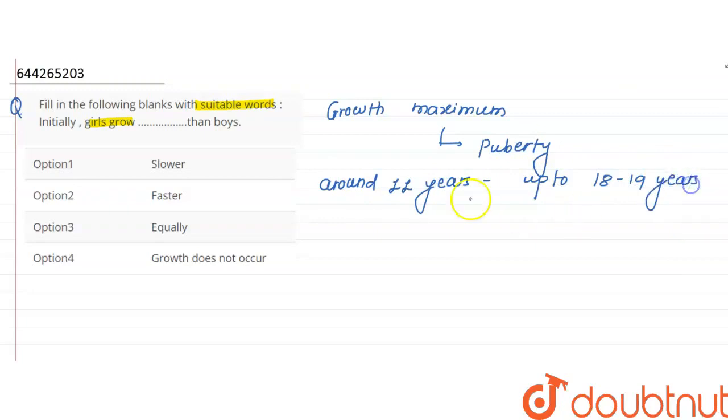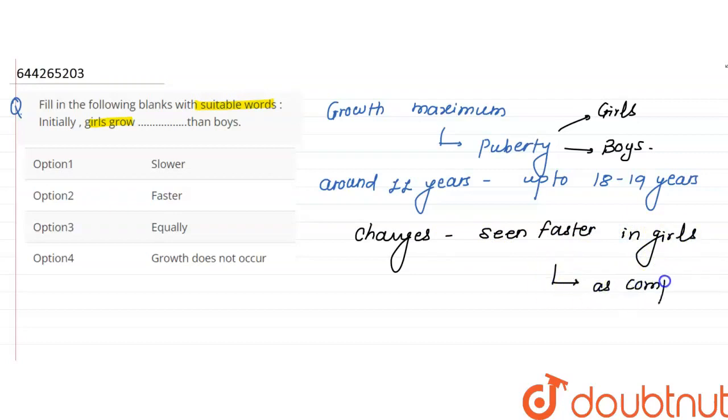Now, this is about the time of puberty. This means the age of onset for both girls and boys. But the changes are seen faster in girls than boys.